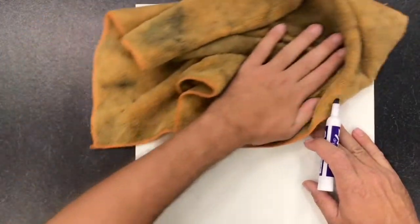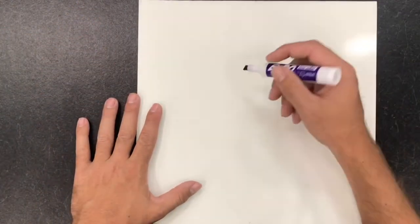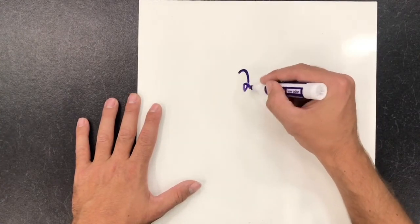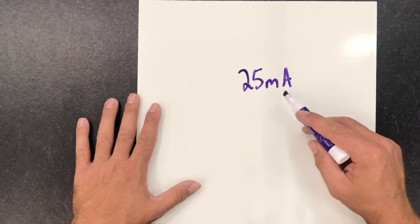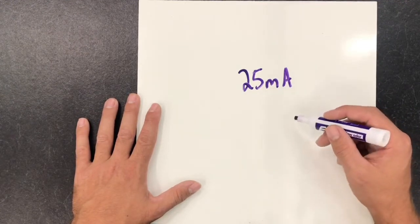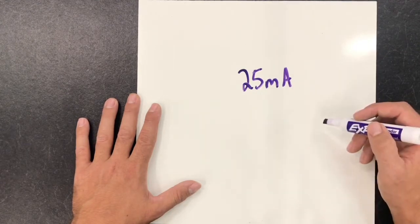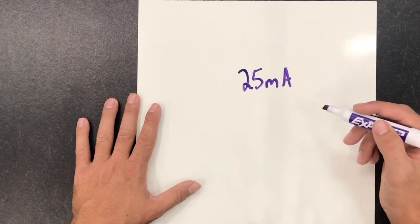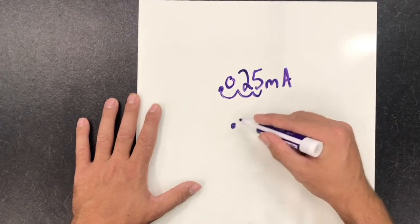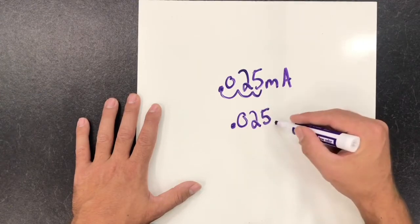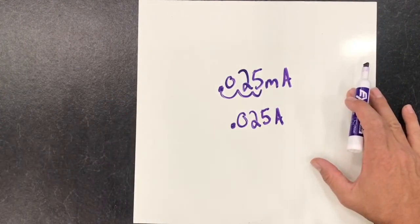Another important thing: you can't do any of these formulas without the full unit. For example, if you have 25 milliamps, that's not a full unit — amps is the full unit. If you try to do a formula with milliamps, you'll get the wrong answer. You have to convert to the full unit first. Since milliamps converts to amps, you move the decimal over three places, so 25 milliamps becomes 0.025 amps. Always convert to the full unit before doing the formula.